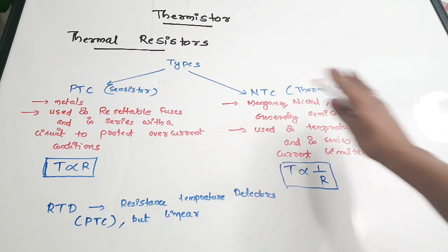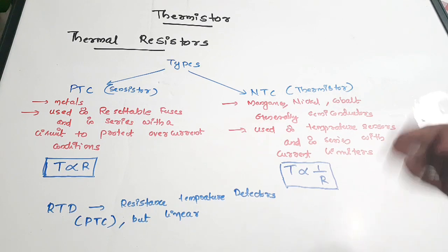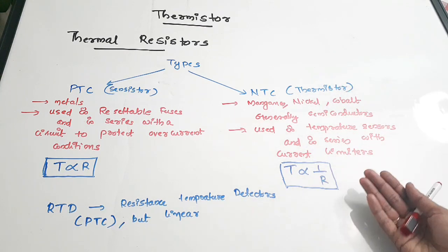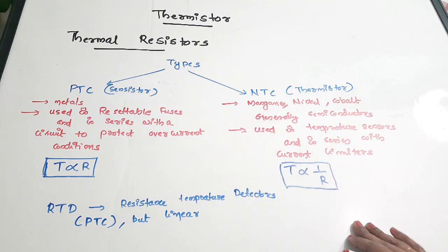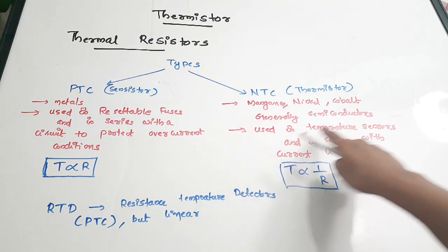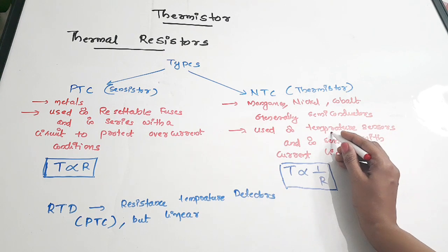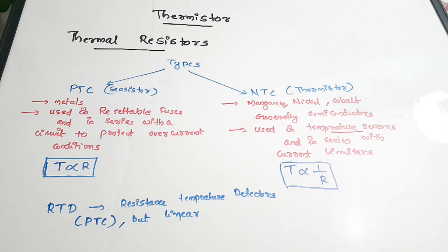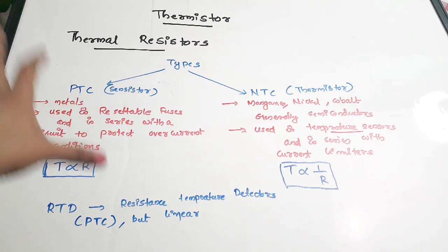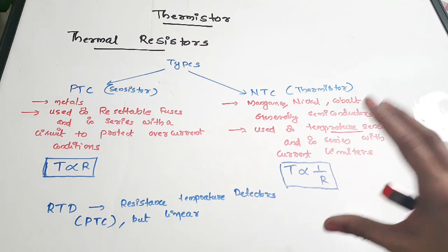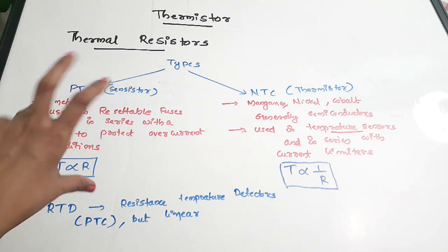Since thermistors require NTC or negative temperature coefficient, semiconductors are used. They are used in constructing temperature sensors for measuring temperatures, and also in series with current limiters. So the two classifications of thermal resistors are: positive temperature coefficient (sensistor) and negative temperature coefficient (thermistor).